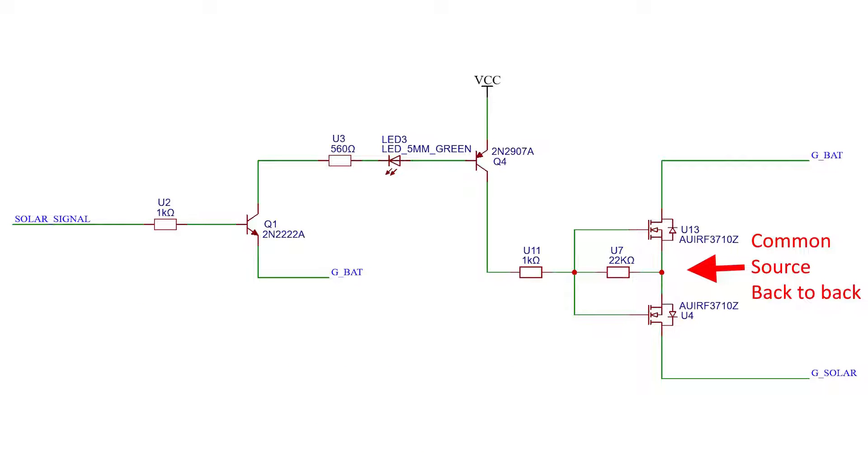There are two ways to connect MOSFETs back to back: common drain and common source. I choose common source, so I can have a single gate signal drive both MOSFETs. By default the gate discharges to the source level through this 22k resistor, which takes less than a millisecond to complete.